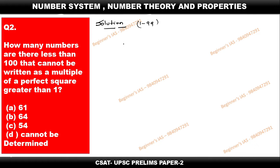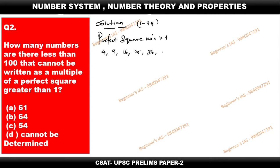Next, the number cannot be a multiple of a perfect square greater than 1. First, identify the perfect square numbers greater than 1: 2 squared is 4, 3 squared is 9, 4 squared is 16, then 25, 36, 49, 64, 81. We should not write 100 here because the question deals with numbers less than 100.